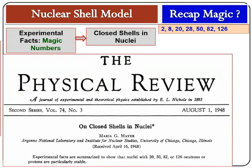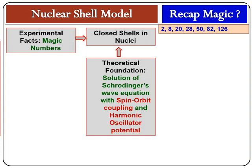This is the screenshot of the first paper by M.G. Mayer. The title of this paper is 'On Closed Shells and Nuclei.' This paper has a one-line abstract, which reads: 'Experimental factors summarized to show that nuclei with 20, 50, 82 or 126 neutrons or protons are particularly stable.' This paper was published in April 1948. This was the experimental set of evidences in favor of closed shells in nuclei, but the theoretical underpinning came from solving Schrödinger's wave equation in a square well potential or harmonic potential.